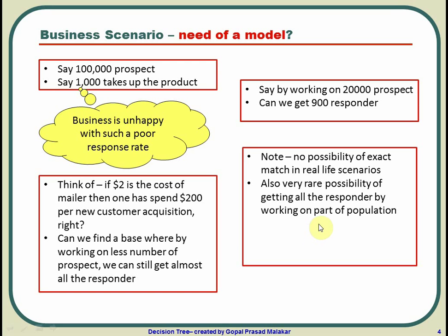Even saying you'll work on 20,000 and get all 1,000 responders is almost impossible. You can get up to 950, but some responders will always fall in the low-propensity group. Those groups have a lesser probability of response, yet some individuals in them will still respond. In the remaining 80,000, there are about 100 responders — the response rate there drops far lower because you took the high-propensity cream to the other side.